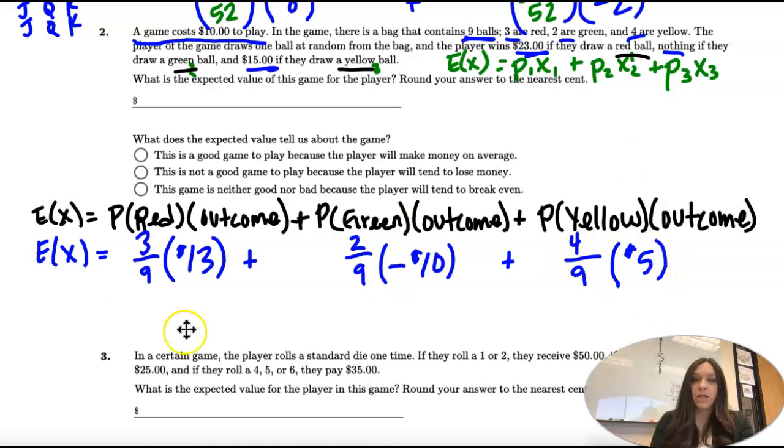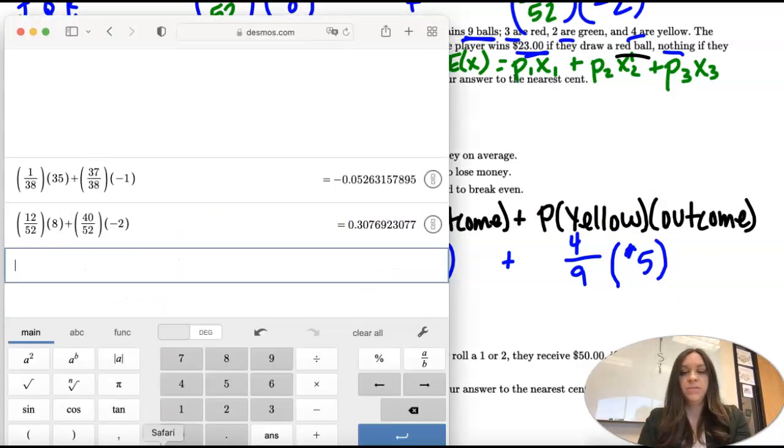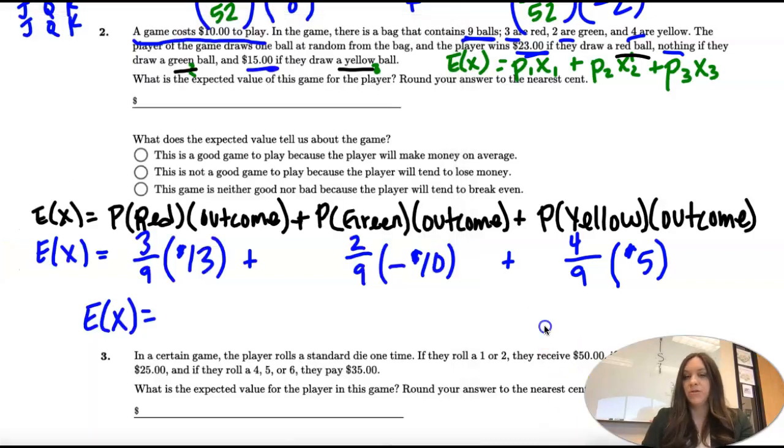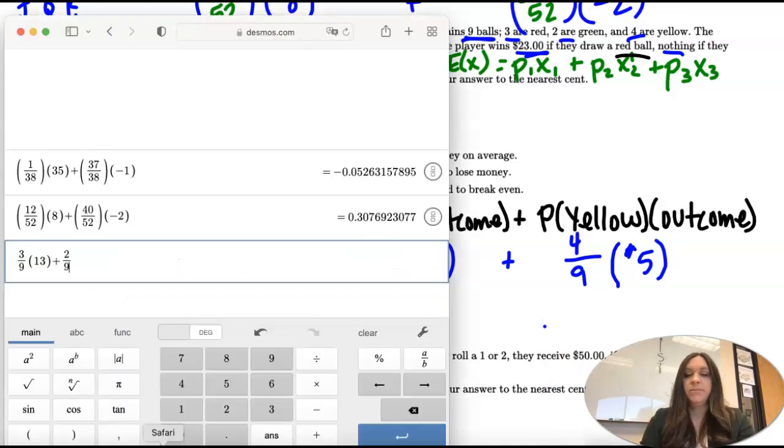Now we calculate. Expected value is 3/9 times 13, plus 2/9 times negative 10, plus 4/9 times 5.